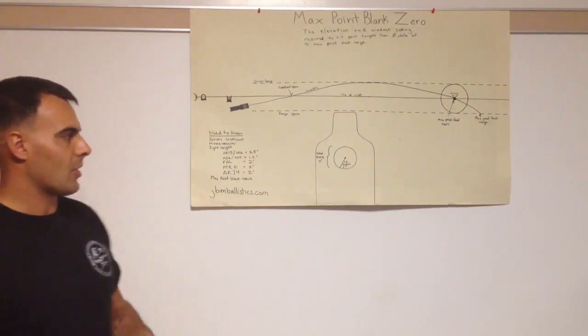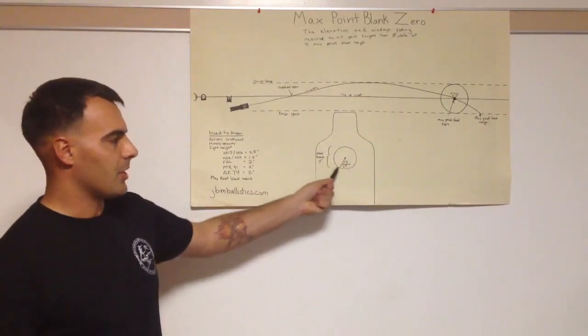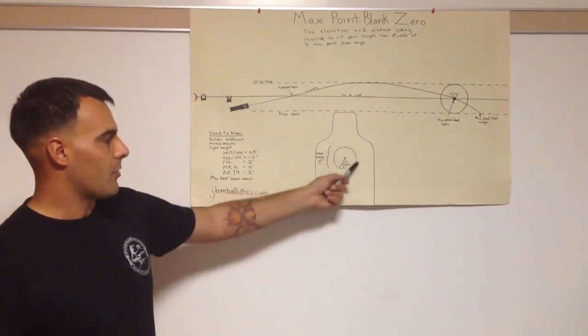Point targets are targets that we can engage by aiming center of mass of our vital zone here. My vital zone, I use a 10 inch center of mass shot.